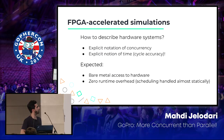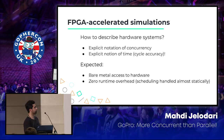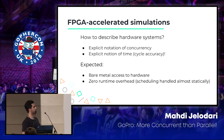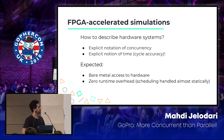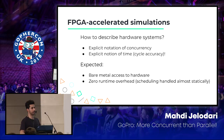How do we model hardware systems? Usually we have to have a notion of concurrency in the language. There are loads of other languages for implementing models like this in hardware, including SystemC, which is much lower level than what Go provides, and there's also an implicit notation of time for cycle accuracy. On the other hand, we have FPGA-accelerated simulators as potential candidates that give us bare metal access to hardware and zero runtime overhead when everything is boiled down to hardware.